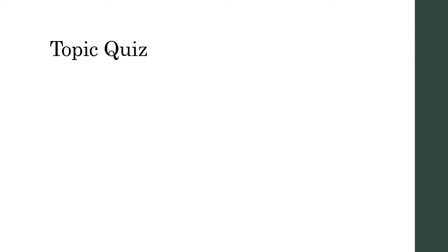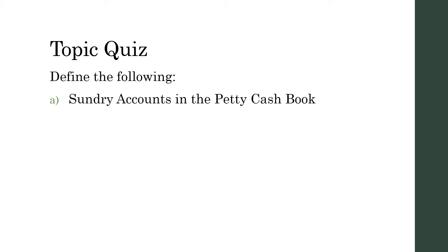Topic quiz. Take a minute to answer the following on a separate paper or page in the back of your exercise book. Define the following: A) Sundry accounts in the petty cash book, and B) Sundry expenses. Pause the video now.